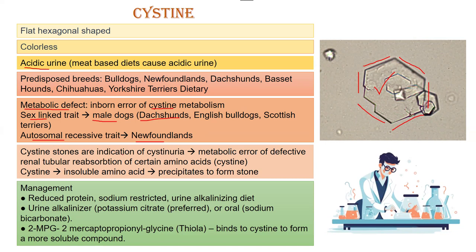Cysteine stones are basically an indication of cystinuria — cysteine appearing in the urine. There is a metabolic error of defective renal tubular reabsorption of certain amino acids like cysteine, meaning these tubules are not reabsorbing these amino acids back into the body.